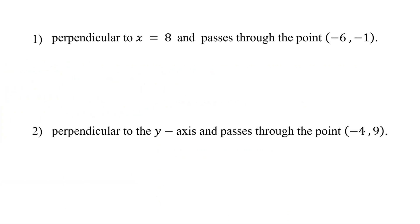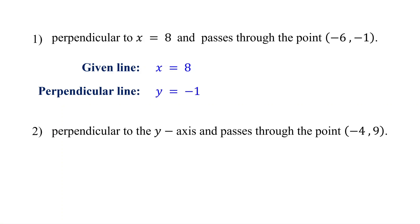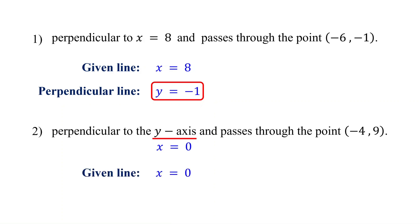Try these. For the first one, the given line is x equals 8, which is a vertical line. A perpendicular line is horizontal, with the equation y equals the y-coordinate of the given point. The second one says perpendicular to the y-axis. Remember, the y-axis corresponds to x equals 0, so the equation of the given line is x equals 0, which is a vertical line. A perpendicular line is horizontal, with the equation y equals the y-coordinate of the given point. Give it a thumbs up, and consider subscribing.